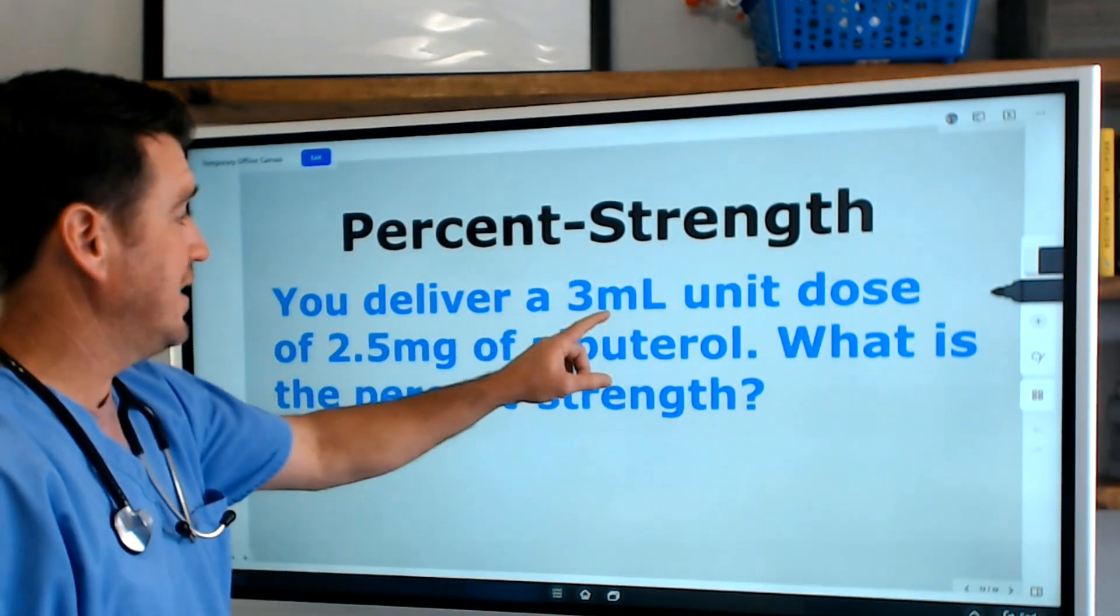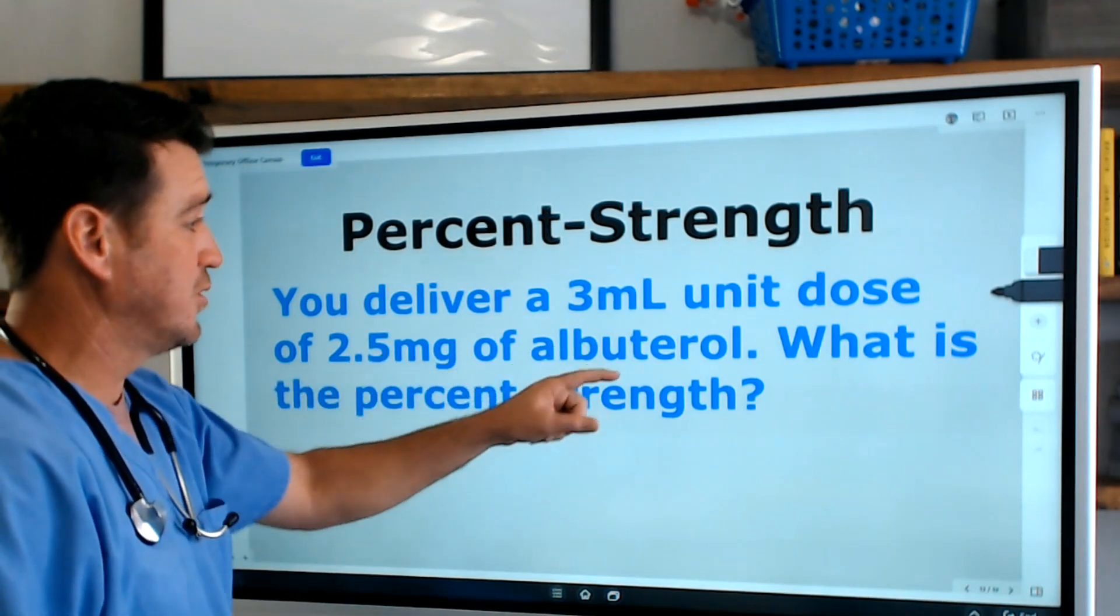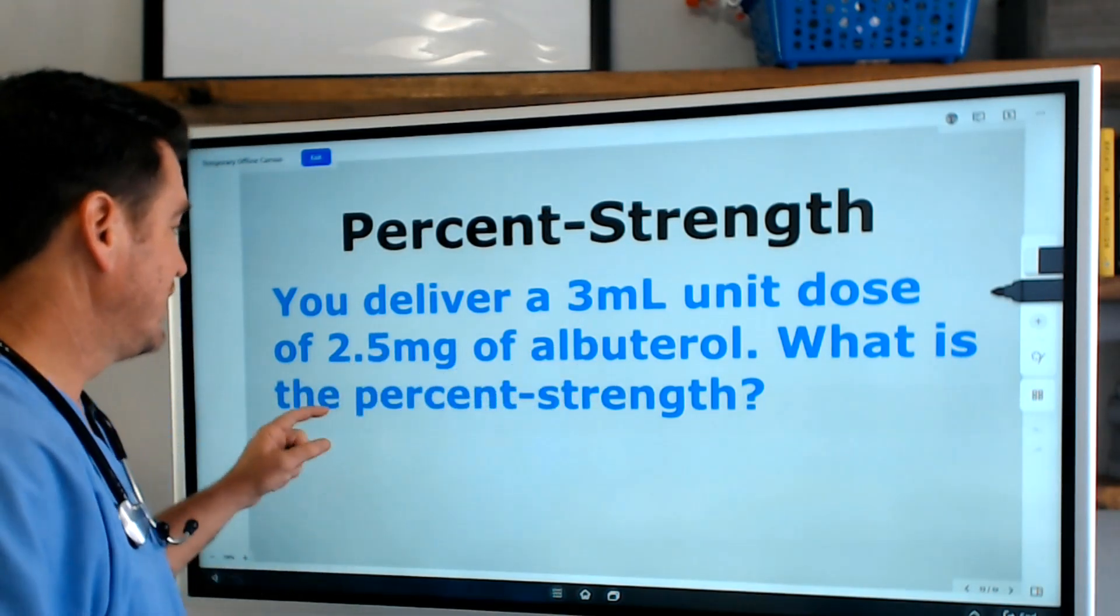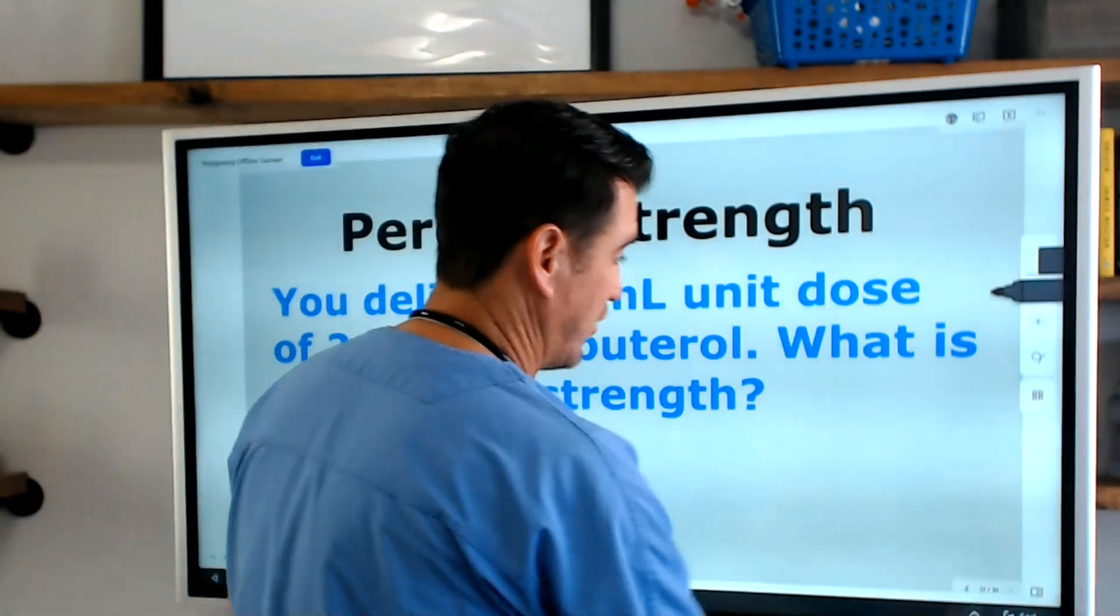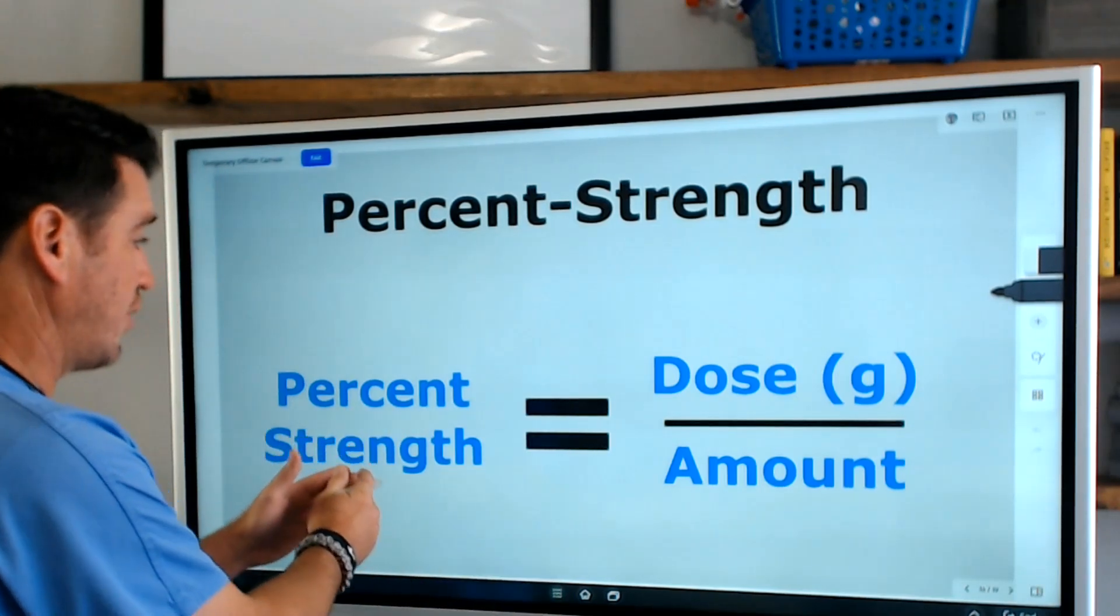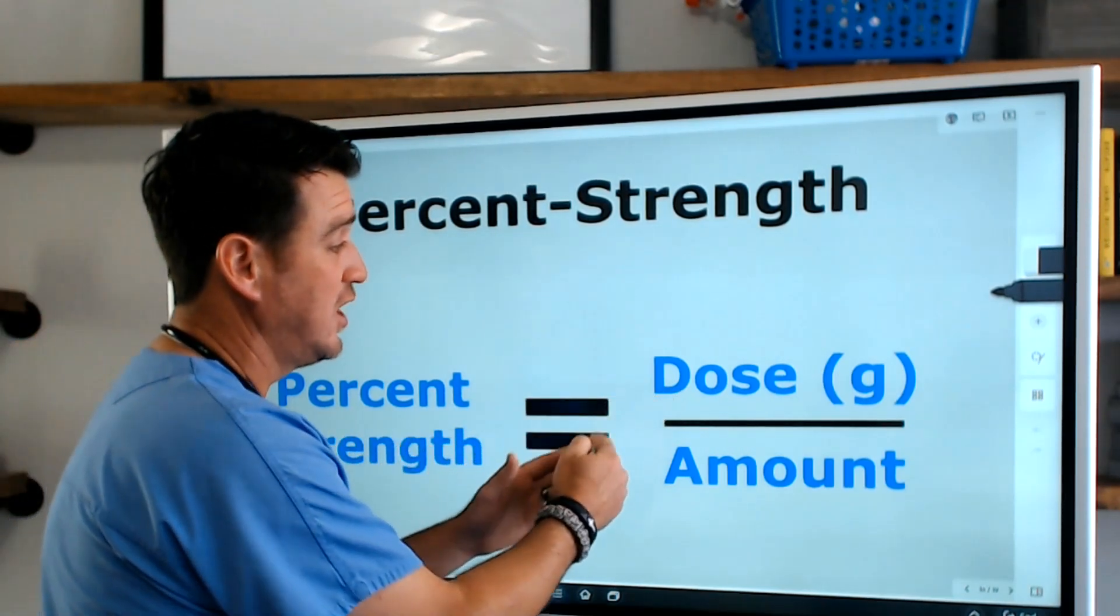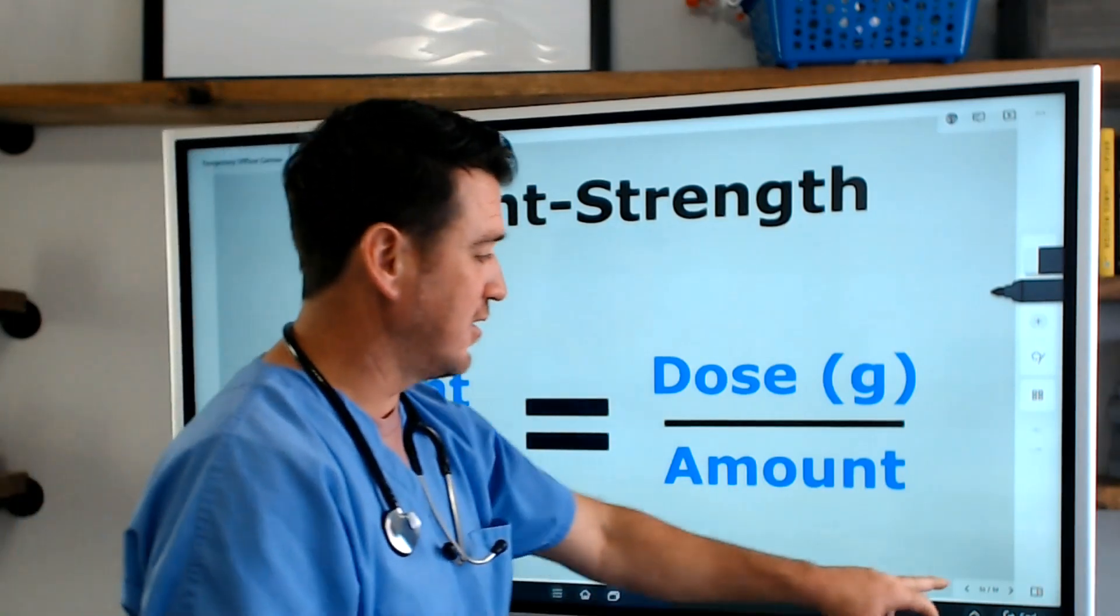You deliver a 3 ml unit dose of 2.5 milligrams of albuterol. What is the percent strength? Now let's go back here and look at the formula. Remember, the formula is percent strength equals dose over amount.